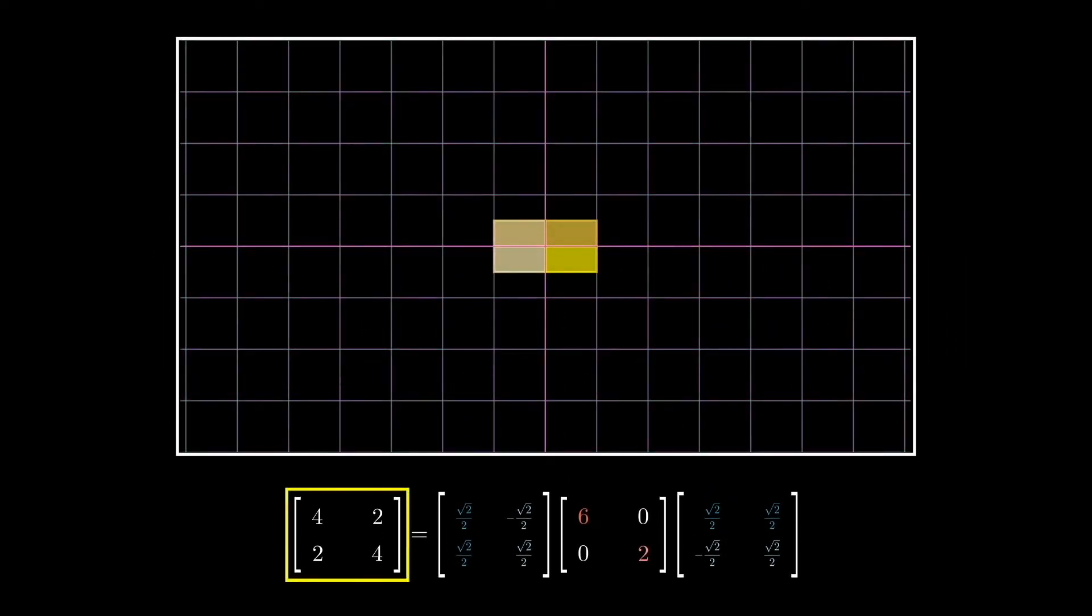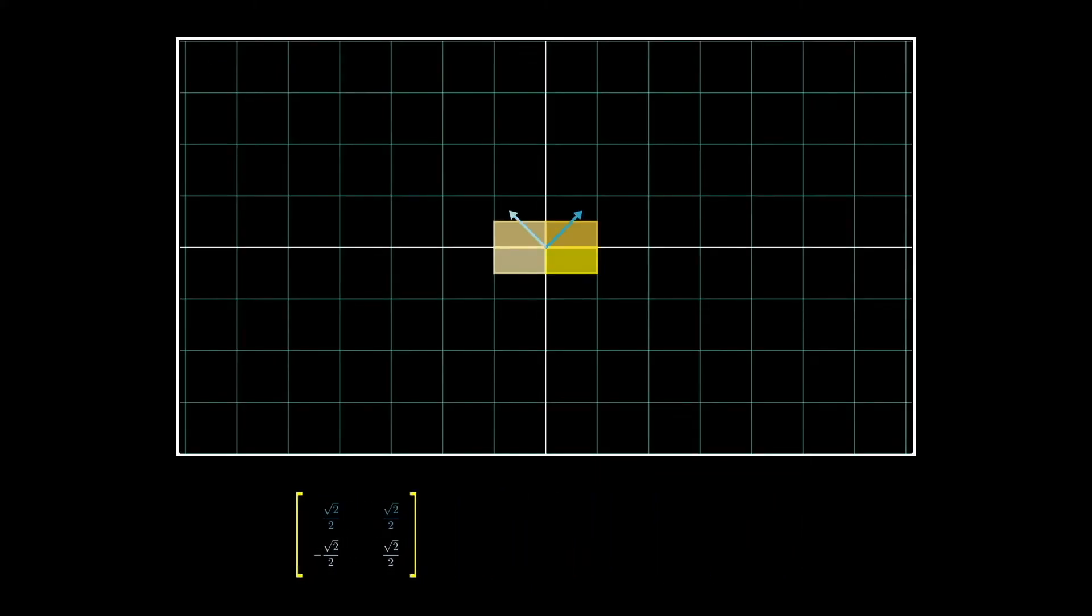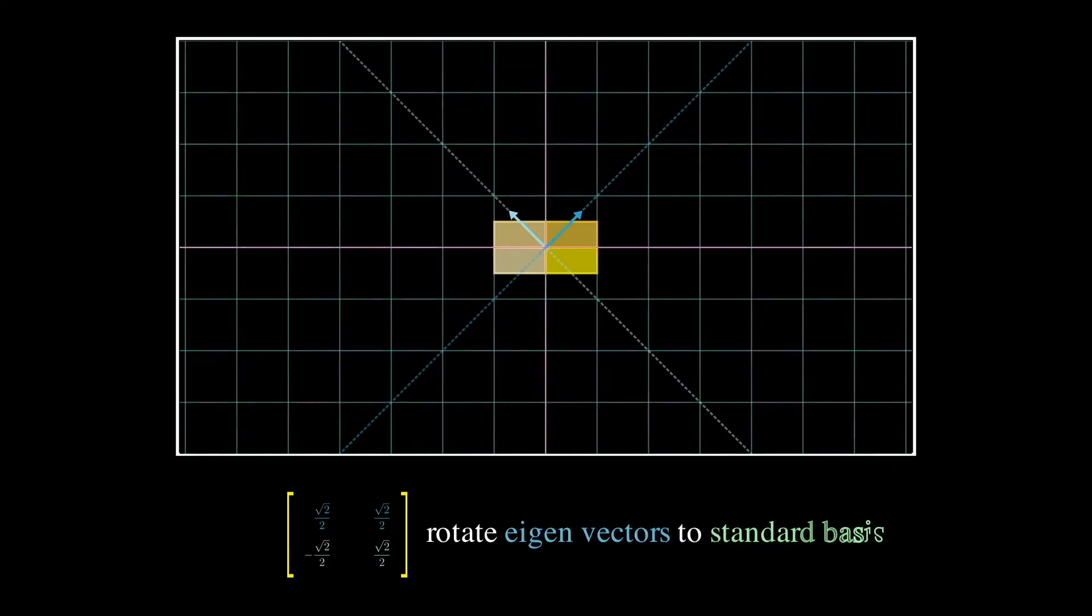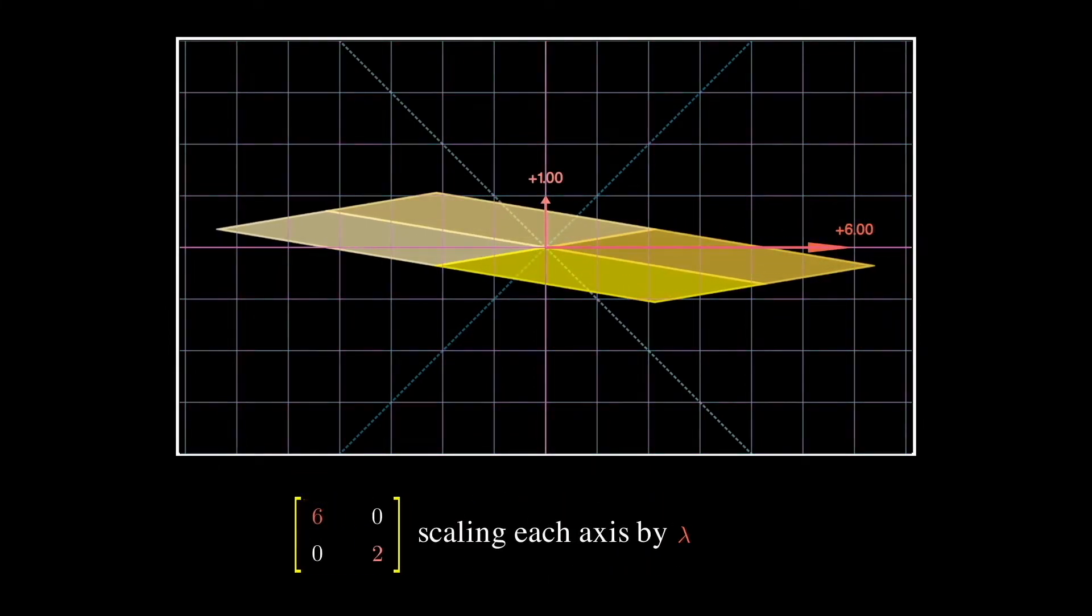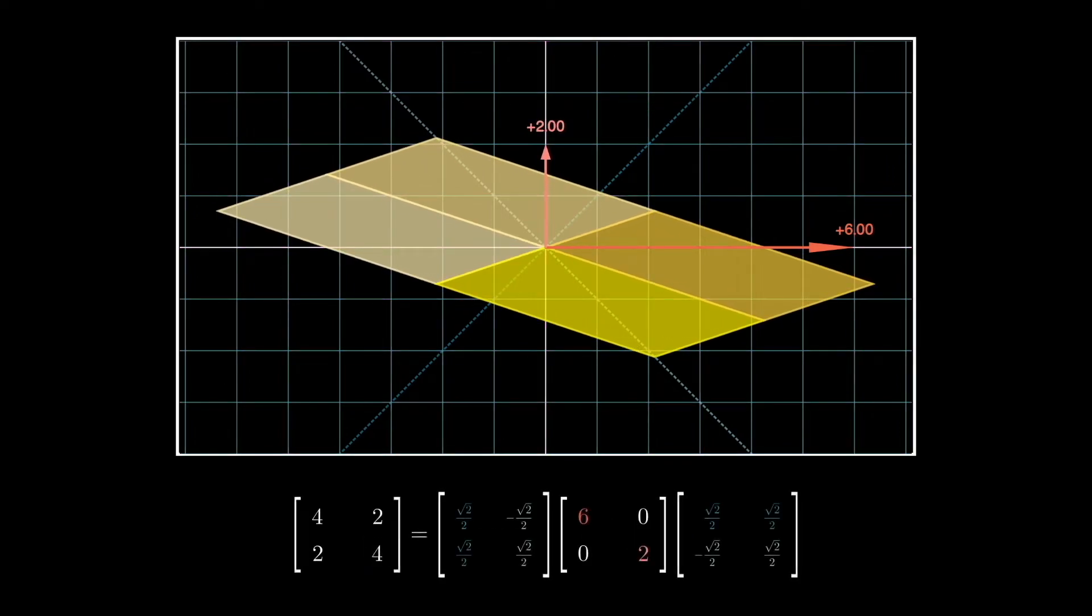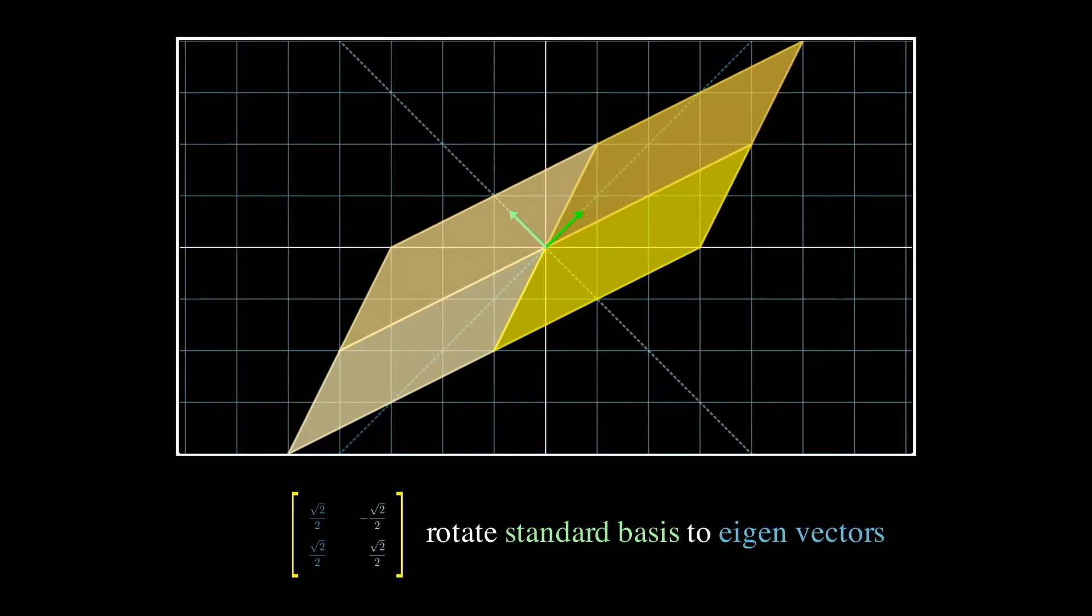Now let's visualize in action. This symmetric matrix can be spectrally decomposed into the three matrices on the right. The linear transformation S produces looks like this. But we know it will just be a sequence of three simple transformations on the right. Firstly, we identify the eigenvectors of S, and rotate them onto the standard basis. Secondly, we scale the x-axis by 6, and y-axis by 2. Thirdly, we rotate backwards from the standard basis to the eigenvectors.